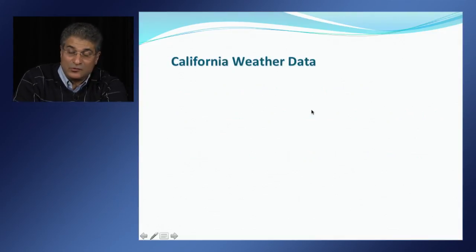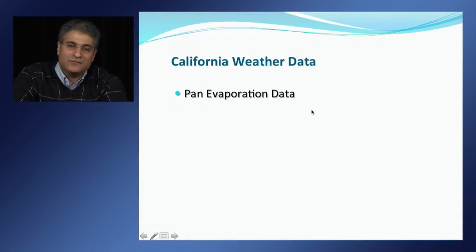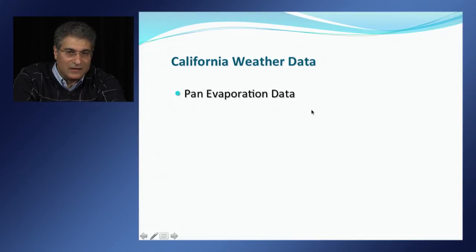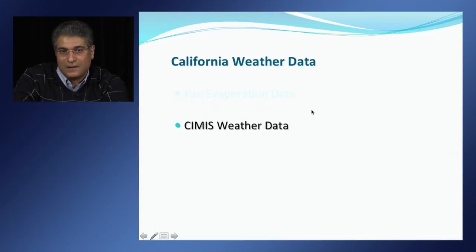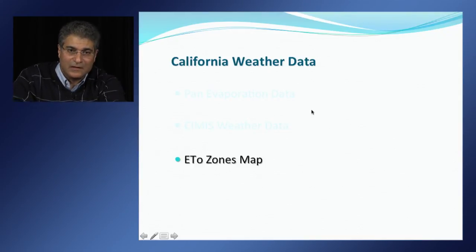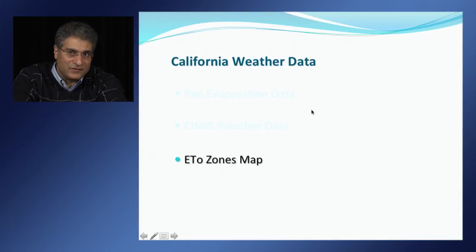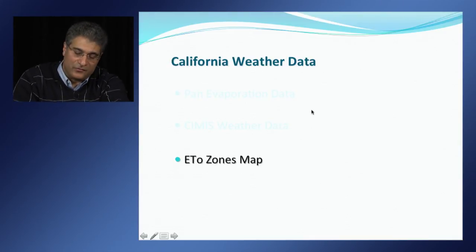COPPLUS was developed to use California CIMIS data as well as PAN evaporation data. PAN is one of the most common traditional methods of estimating daily reference evapotranspiration. CIMIS stands for California Irrigation Management Information System. Data from CIMIS are very accurate and has many more stations than the PAN network. COPPLUS also includes a California map showing 18 zones of similar reference evapotranspiration rates, developed by the California Department of Water Resources and the University of California, Davis.